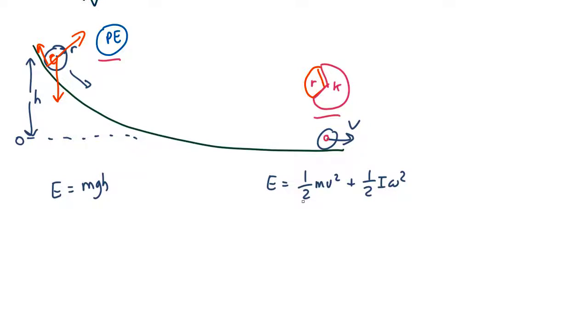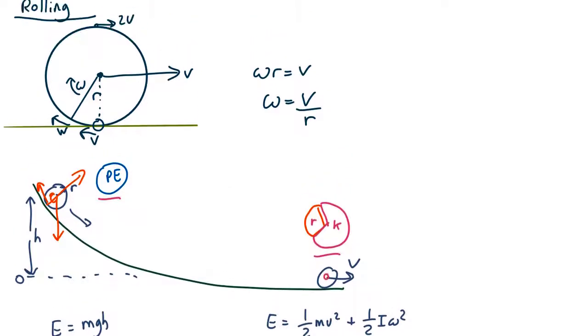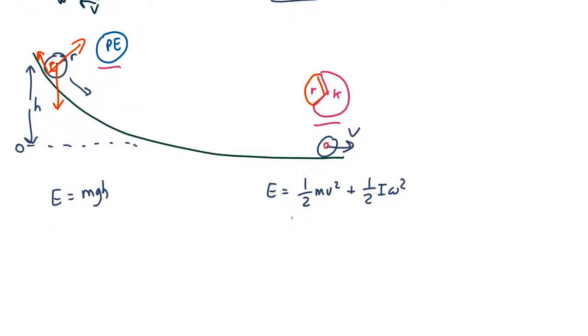We're going to get a half mv squared plus a half I omega squared. The normal equation for kinetic energy from the center of mass and the normal equation for rotational energy around the center of mass. Now we know that omega is v over r because it's rolling not slipping. So that's equal to half mv squared plus half I v over r squared.